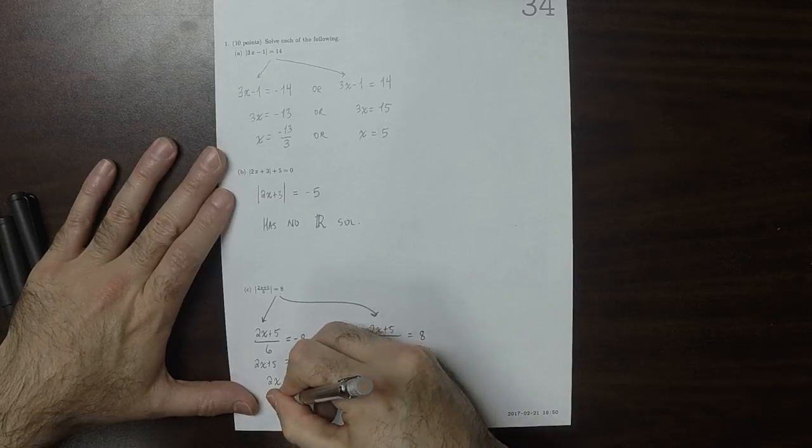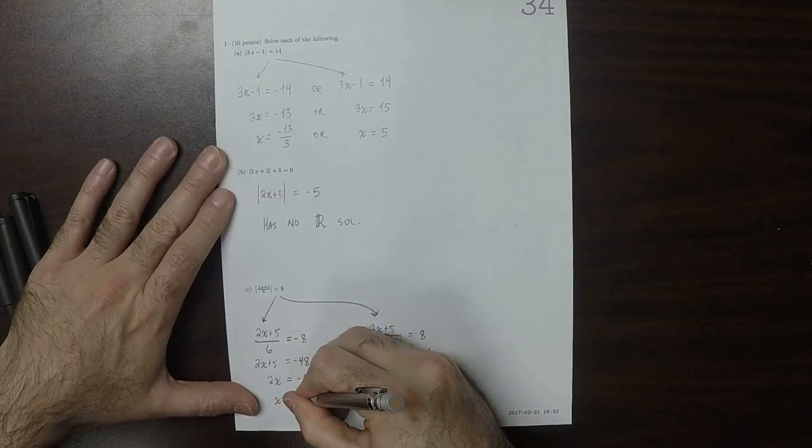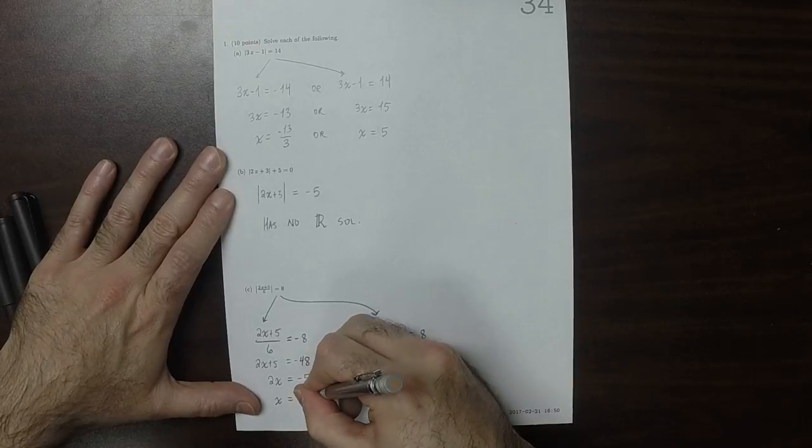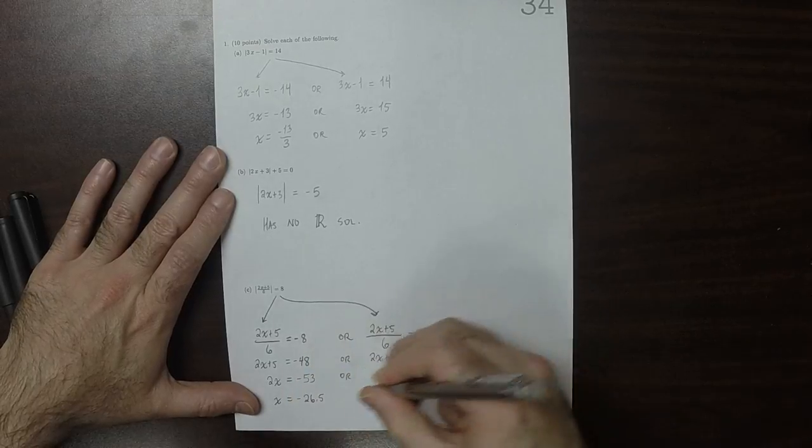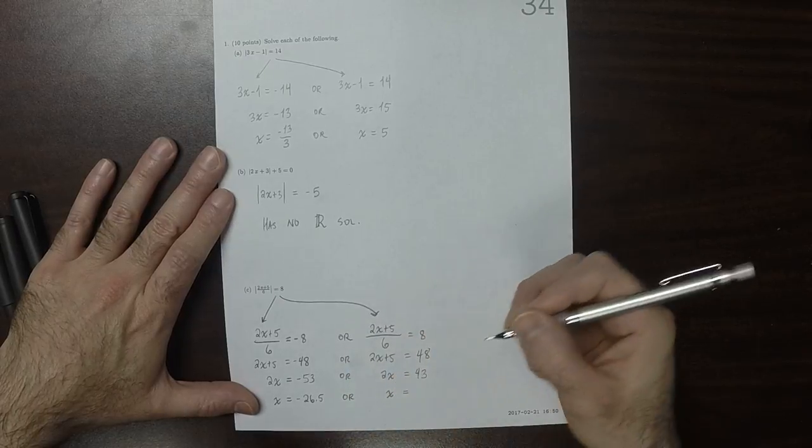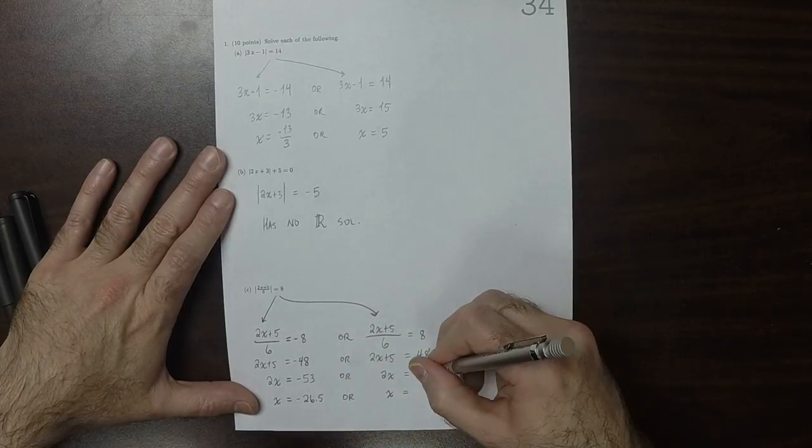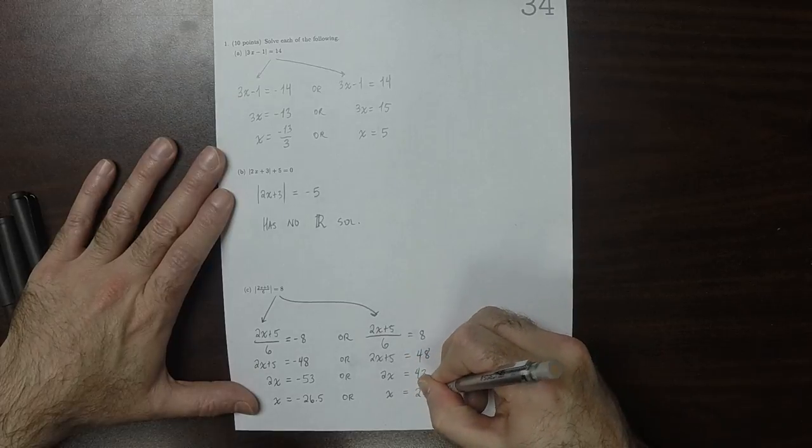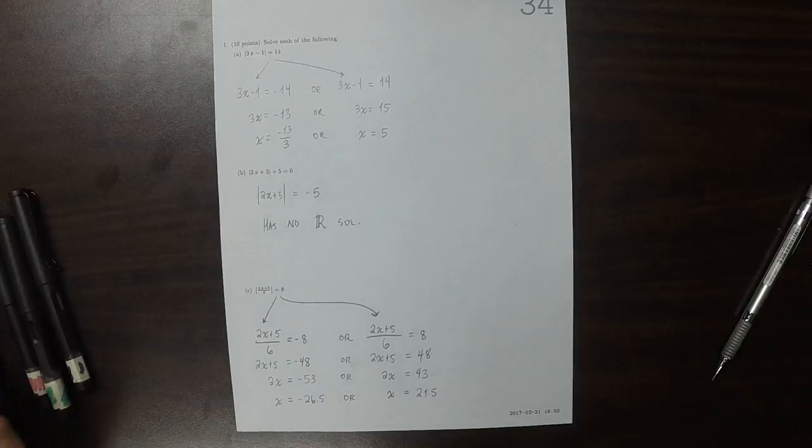So, x is negative, what, 26 and a half? Or, x is 21 and a half. And that's the answer.